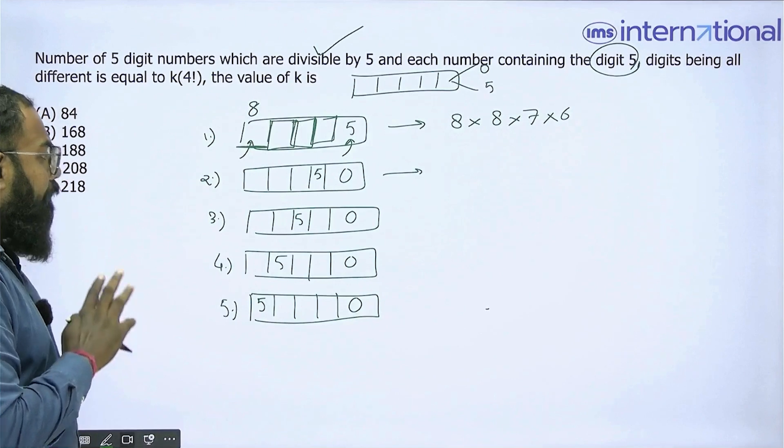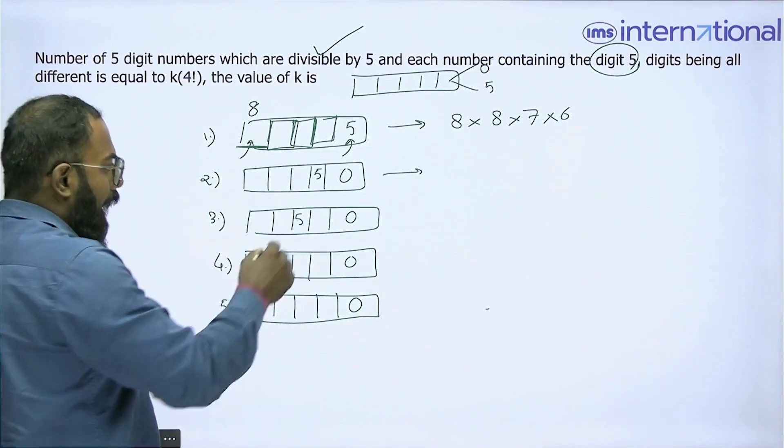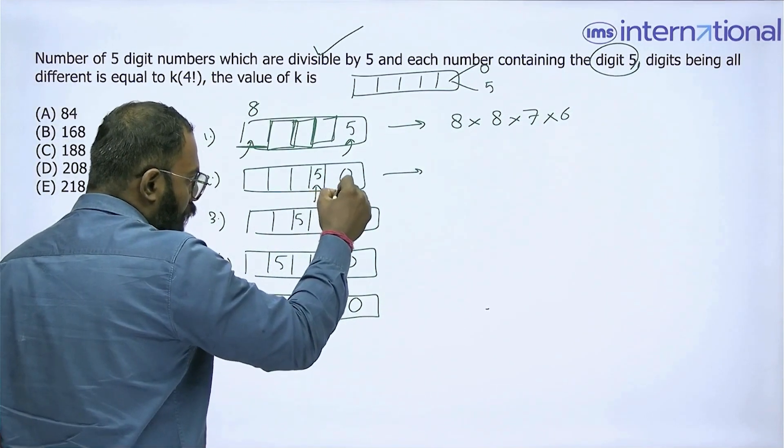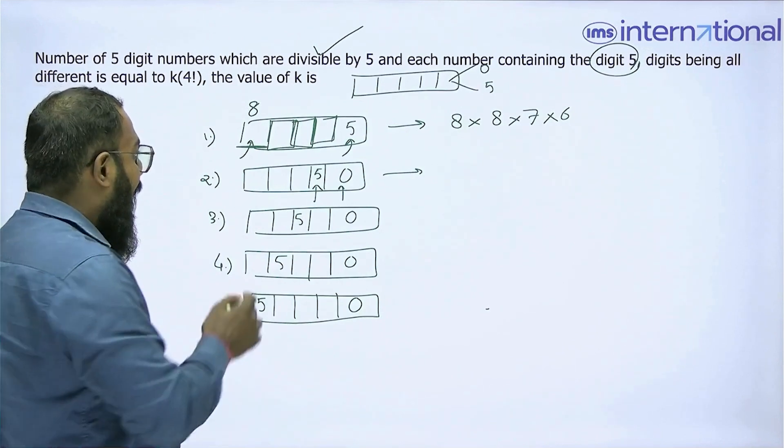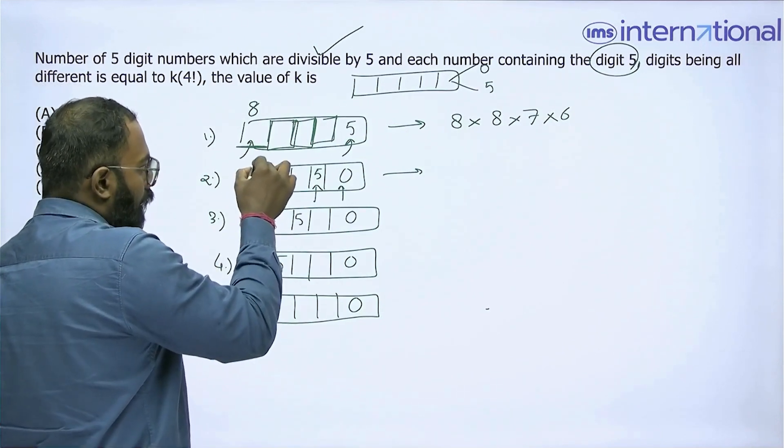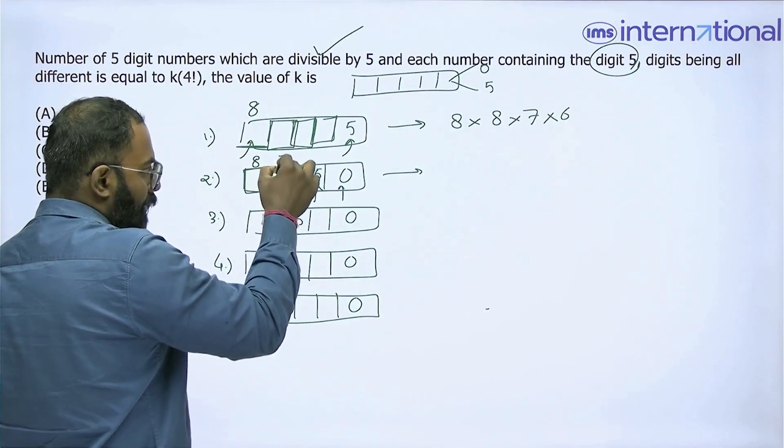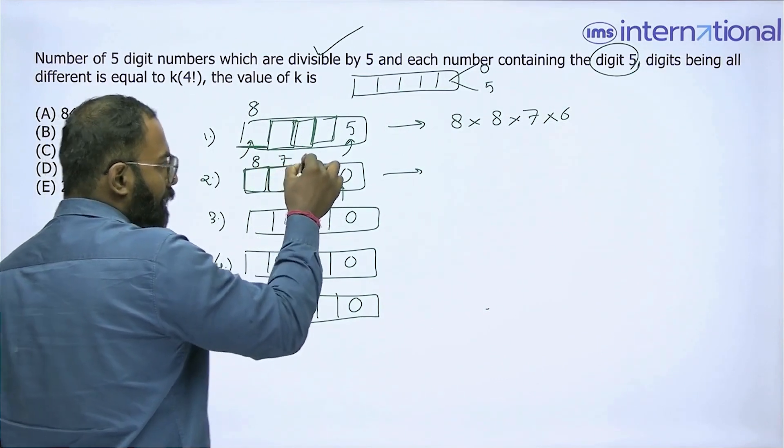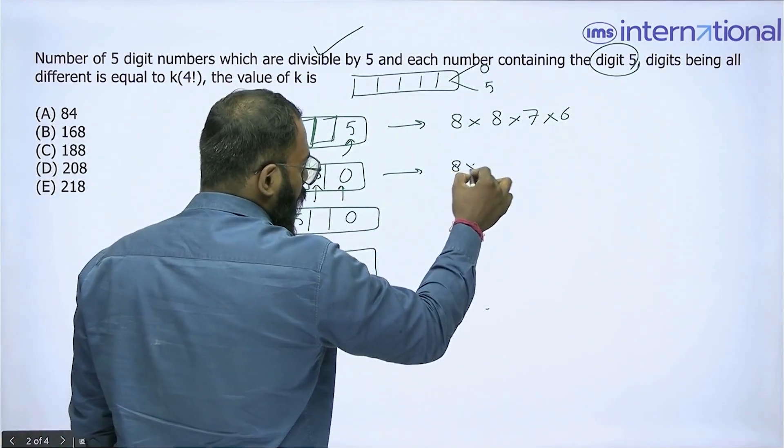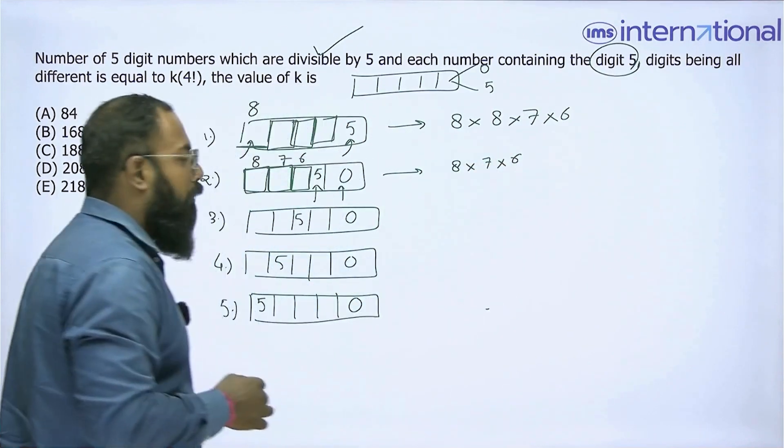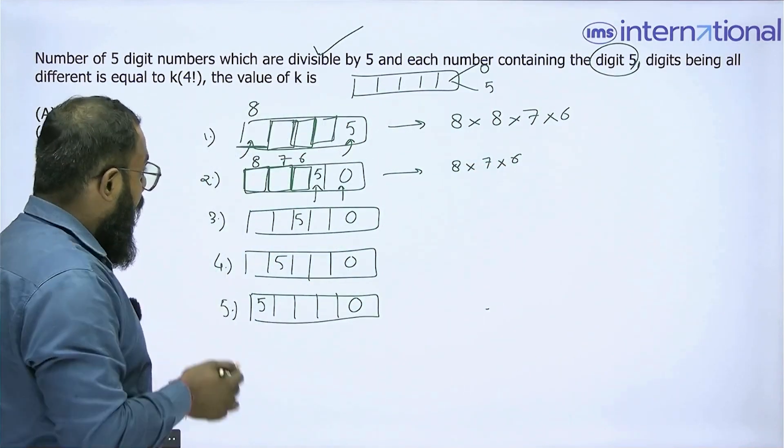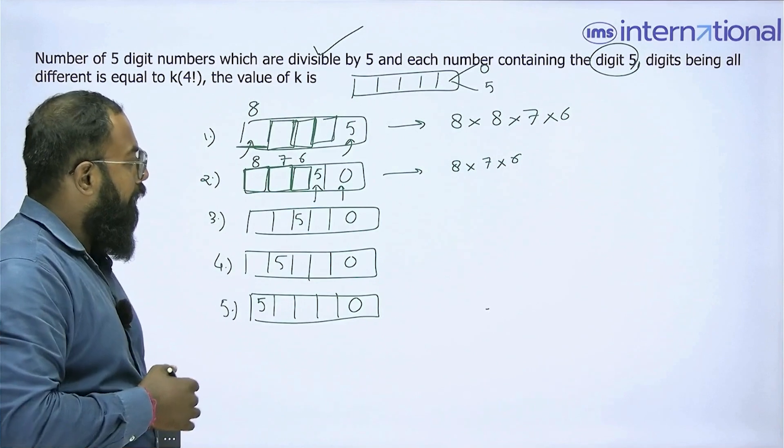Let's discuss case number 2. In this I have 3 boxes and two boxes are already filled with 0 and 5. I can fill this box in 8 different ways, this box in 7 different ways, and this box in 6 different ways. So a total of 8 × 7 × 6 number of ways in which case number 2 can be dealt.